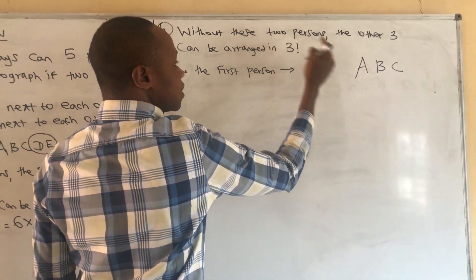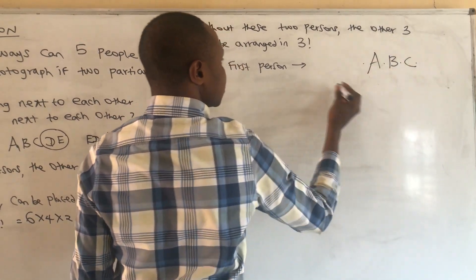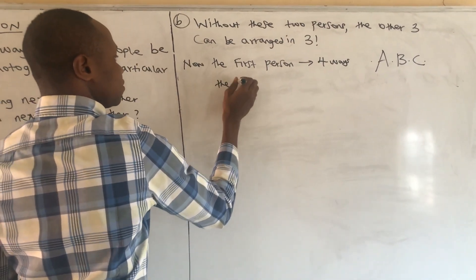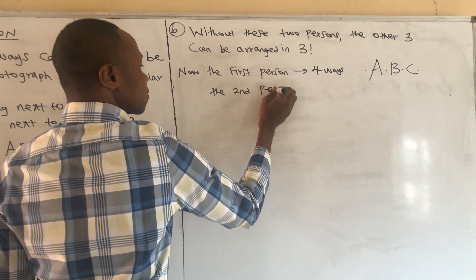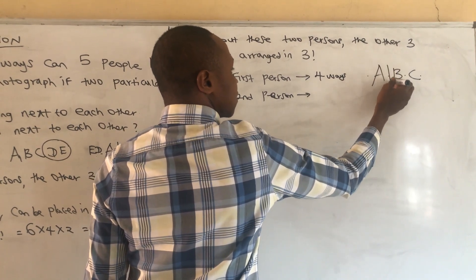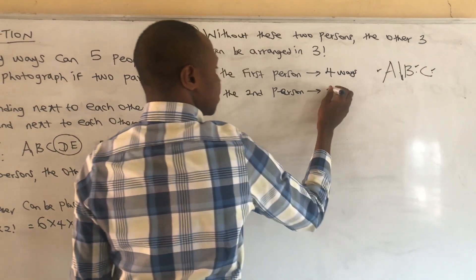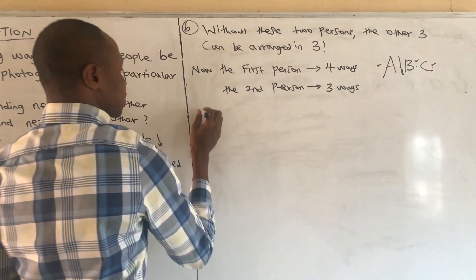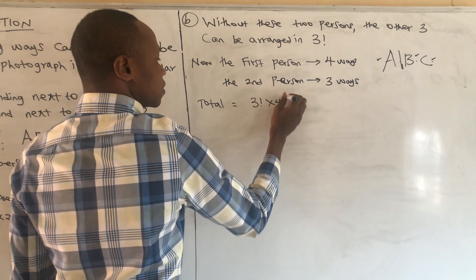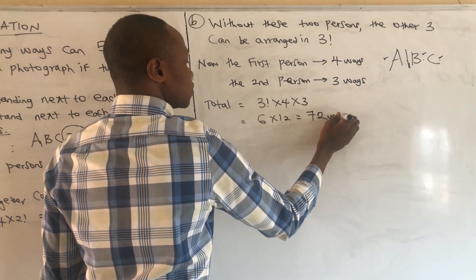Since the two persons must not stand together, the first person can take any of four positions — four ways. If the first person chooses one position, the second person can only take three of the remaining positions — three ways. So the total is three factorial times four times three.